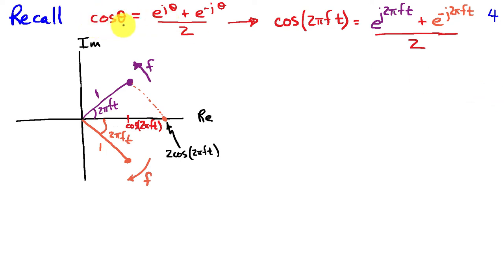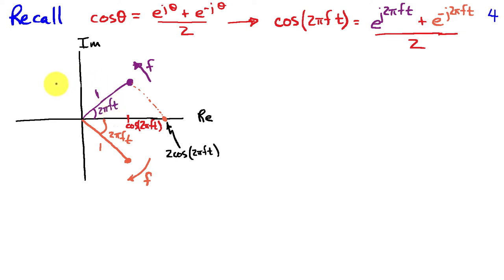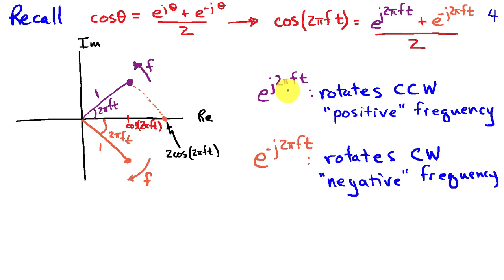Recall that cosine of theta can be written as e to the j theta plus e to the minus j theta, divided by 2 — a consequence of Euler's theorem. Replacing theta with 2 pi ft, we have two complex sinusoids: e to the j 2 pi ft, shown in purple, rotating counterclockwise at frequency f cycles per second; and e to the minus j 2 pi ft, shown in orange, rotating clockwise at f cycles per second. This is where we get the notion of negative frequency.